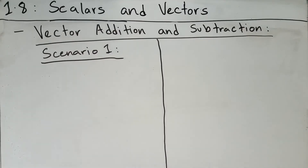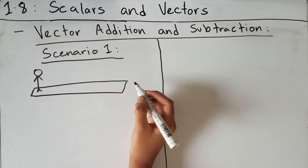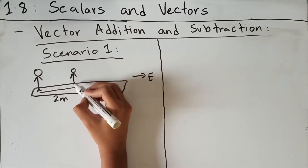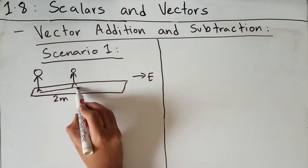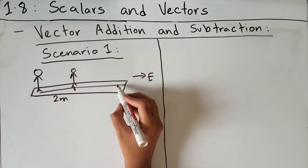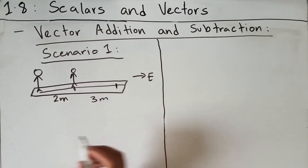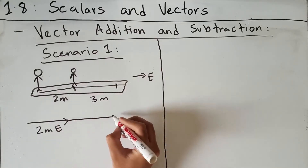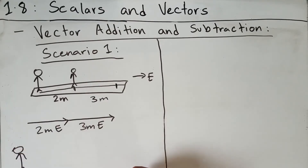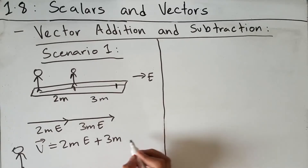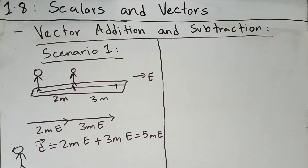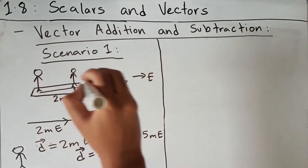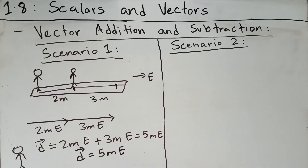Now let's talk about vector addition. In scenario one, you walk 2 meters east along a sidewalk and then displace another 3 meters east. The total resultant vector is 2 meters east plus 3 meters east, giving 5 meters east. So your resultant vector from vector addition is 5 meters east.